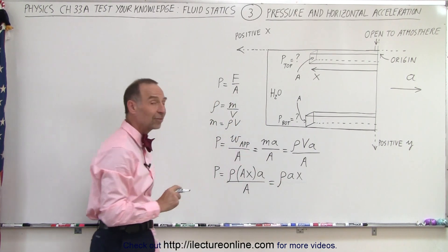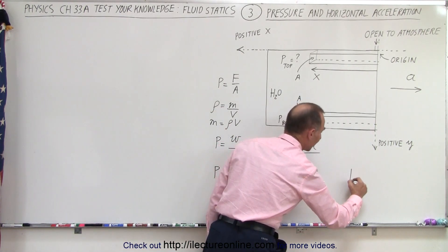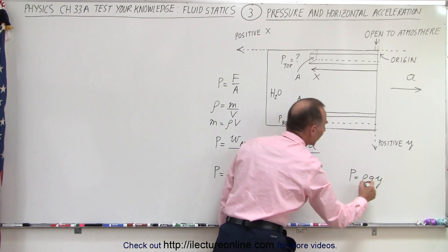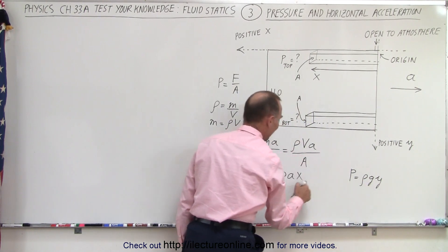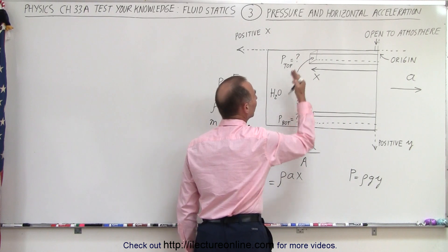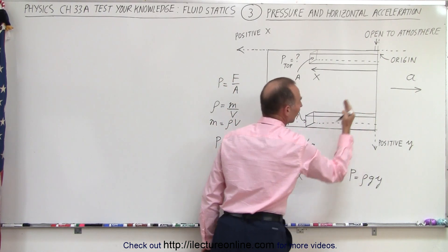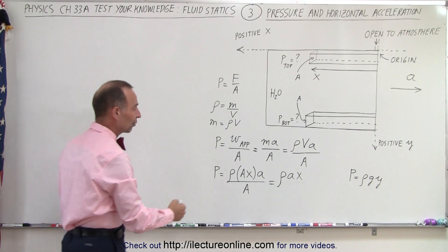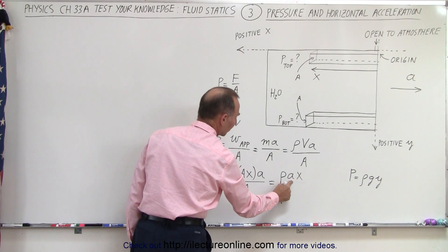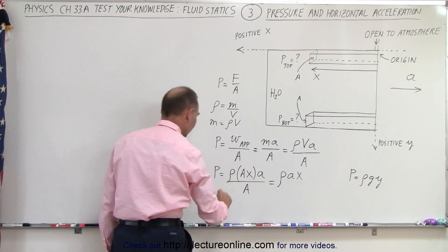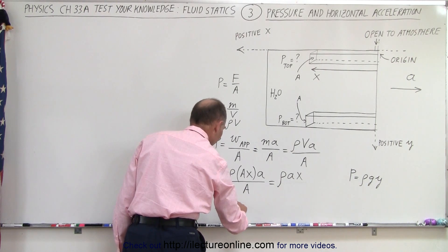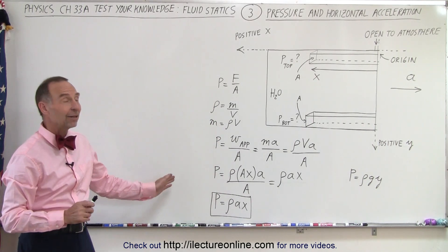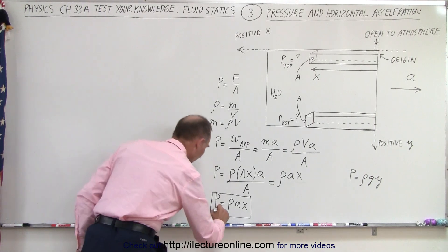So the pressure simplifies to density times acceleration times x — or ρax. Normally, we see that pressure due to depth is ρgy. But in this case, instead of g we have the acceleration A, and instead of y we have x. The further you go to the left, the greater the pressure. The pressure is greatest on the left side, and the pressure at the very right equals zero. It's simply a function of where you are from right to left: the further left, the greater the pressure as a function of acceleration and liquid density. This is how you find the pressure at the top.